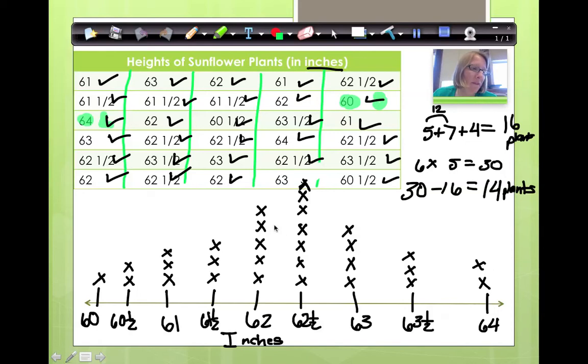So if the three most frequent measurements are 62, 62 and a half, and 63, then does that mean that her plants all fall between 62 and 63 inches? No, it doesn't, does it? Because we still have these others. We have some at 60 inches, we have some at 64 inches, and 60 and 64 does not fall between 62 and 63.